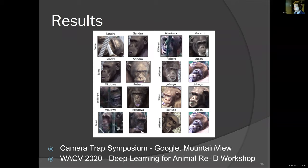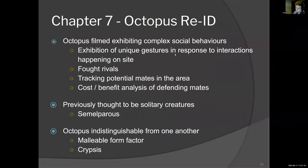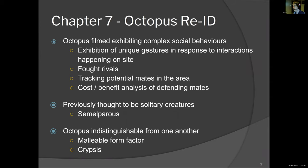The question was: can we actually do this in practice? Stefan Lindquist, from the department of philosophy, is an absolute enthusiast for the prospect of octopus intelligence — he values very much the fact of the independent evolution of this creature. He has footage of octopus filmed exhibiting complex social behaviors where there are unique gestures in response to interactions, rivals fighting each other, tracking of mates in the area, and you can witness cost-benefit analysis as they defend mates on site. This is particularly interesting from an ethological point of view because octopus were previously thought to be solitary creatures — they're semelparous, meaning the mother has a single reproductive cycle and dies directly after giving birth, so there is no parental teaching of communication, and yet here they are exhibiting these social behaviors.